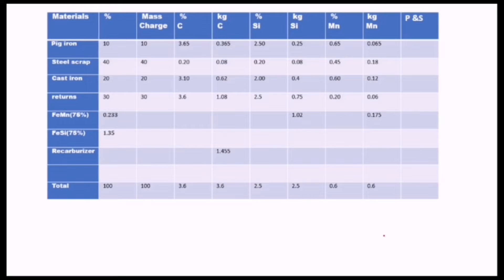This is the table below — I've already done the calculation. I'm going to explain what I did here for you to understand. In the question given to us, they gave us that the pig iron is 10%, the scrap is 40%, the cast iron is 20%, and the returns is 30%, so the total is 100%. Now for the mass charge: how do you find the mass charge of pig iron, which is 10%? You find 10 over 100 times 100, which will give you the mass charge of pig iron. Because they say the total charge coming in is 100 kilograms, so you get 10% of 100, which is 10. You do the same for the steel scrap, the cast iron, and the returns.